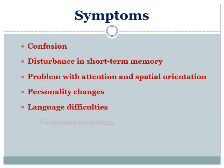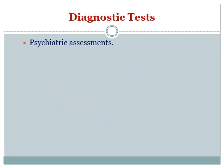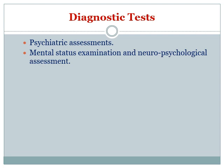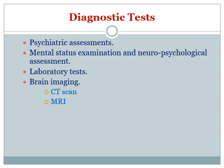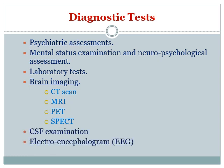Alzheimer's disease can be diagnosed by several methods, including psychiatric assessment, mental status of the person, and neuropsychological assessment. Laboratory tests can identify the status of neurochemicals. Brain imaging helps find the area and severity of the disease and can be done by CT scan, MRI, PET, or SPECT. CSF examination, electroencephalogram, and electromyogram can also be performed to diagnose Alzheimer's disease.